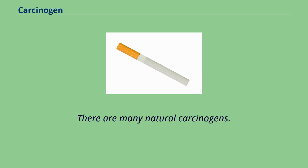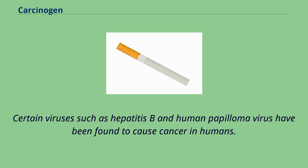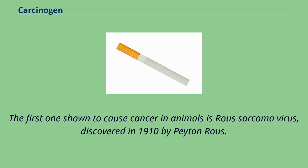There are many natural carcinogens. Aflatoxin B1, which is produced by the fungus Aspergillus flavus growing on stored grains, nuts and peanut butter, is an example of a potent, naturally occurring microbial carcinogen. Certain viruses such as hepatitis B and human papilloma virus have been found to cause cancer in humans. The first one shown to cause cancer in animals is Rous sarcoma virus, discovered in 1910 by Peyton Rous.